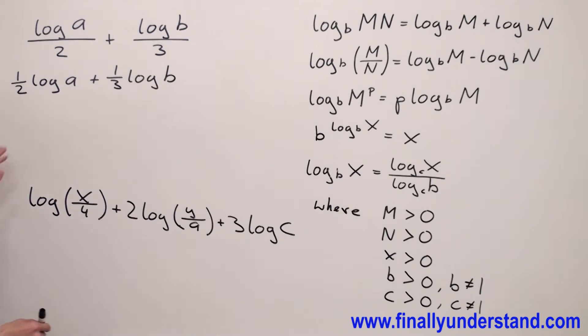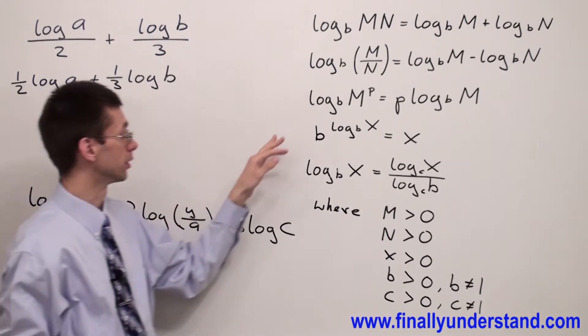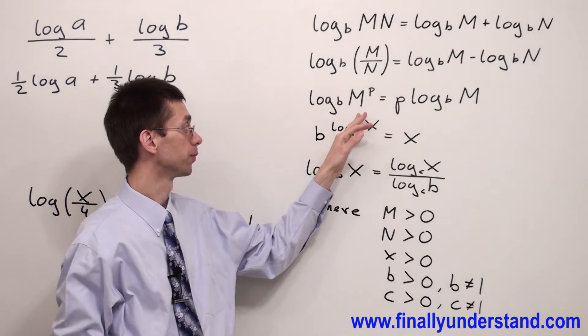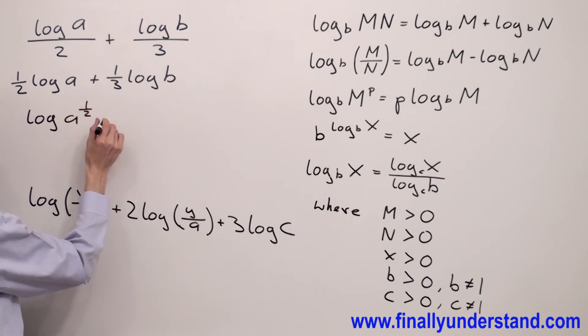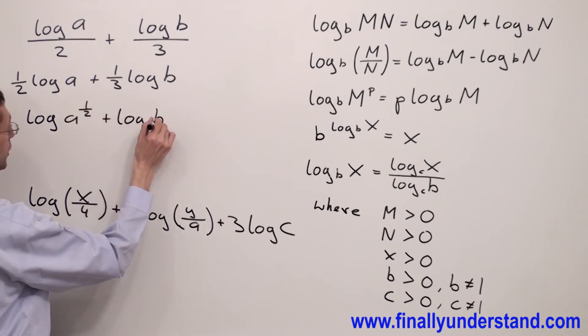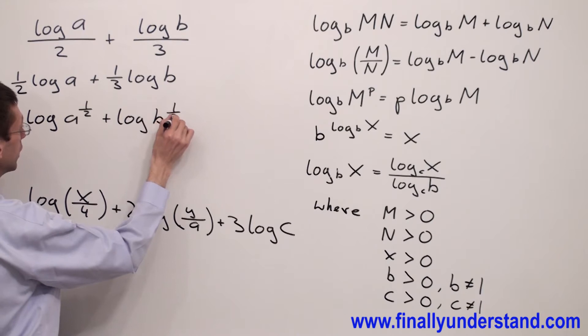We're supposed to use the property for the logarithm of the power and write this as log a to power 1 half plus log b to power 1 third.